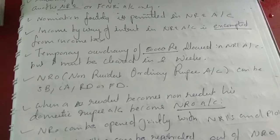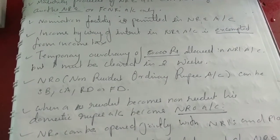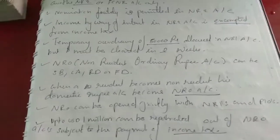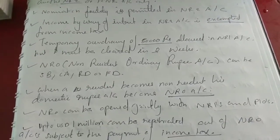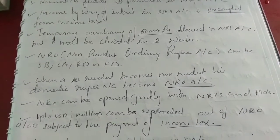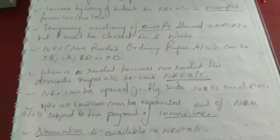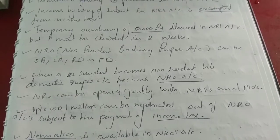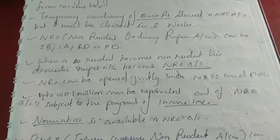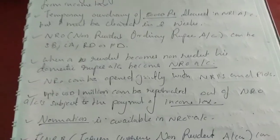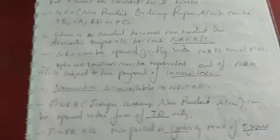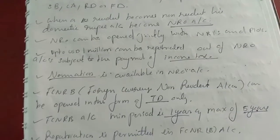NRO — Non-Resident Ordinary Rupee Account — can be a savings bank account, current account, RD, or FD. When a resident becomes a non-resident, their domestic rupee account becomes an NRO account. NRO can be opened jointly with NRIs and PIOs. Up to USD 1 million can be repatriated out of NRO accounts, subject to payment of income tax. Nomination is available in NRO accounts.